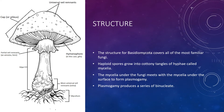The structure for the jelly fungi is the same as the other fungi under the Basidiomycota division. The structure has haploid spores that grow into tangles of hyphae called mycelia. These mycelia usually grow under the surface until they meet up with another mycelium. The two join together to make plasmogamy, and they produce a series of binucleate dikaryotic hyphae.